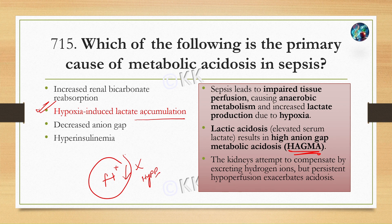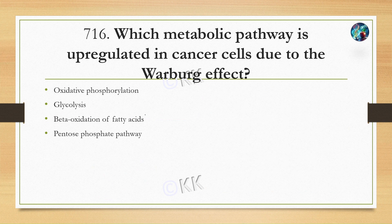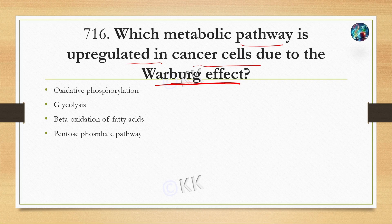Next question: which metabolic pathway is upregulated in cancer cells due to the Warburg effect? Option A: oxidative phosphorylation. Option B: glycolysis. Option C: beta oxidation of fatty acids. Option D: pentose phosphate pathway. The correct answer is Option B: glycolysis.